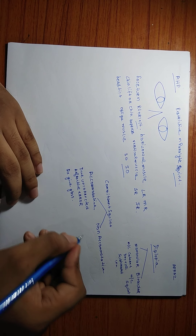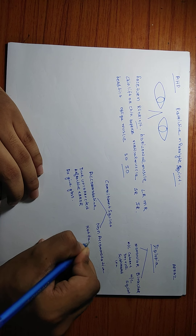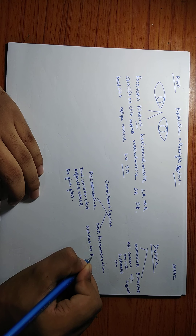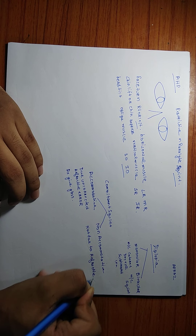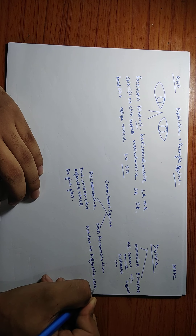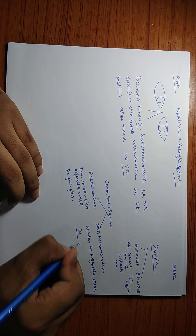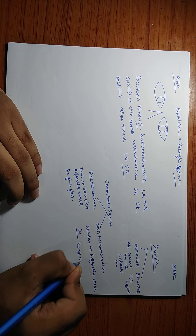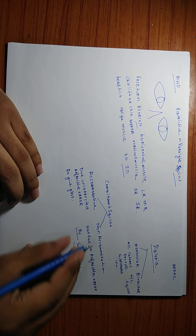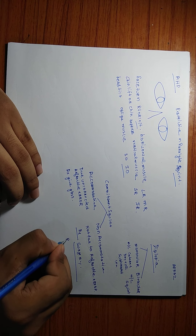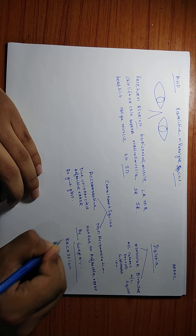If the squint is not due to a refractive error — that is, non-accommodative — then the treatment is surgery. This surgery is divided into two types: recession and resection.